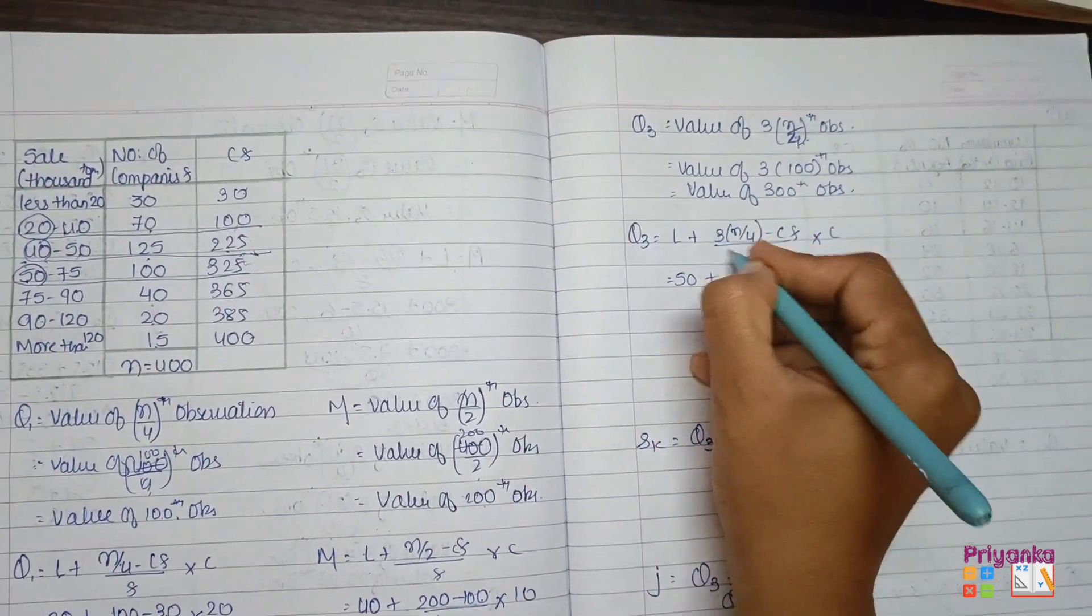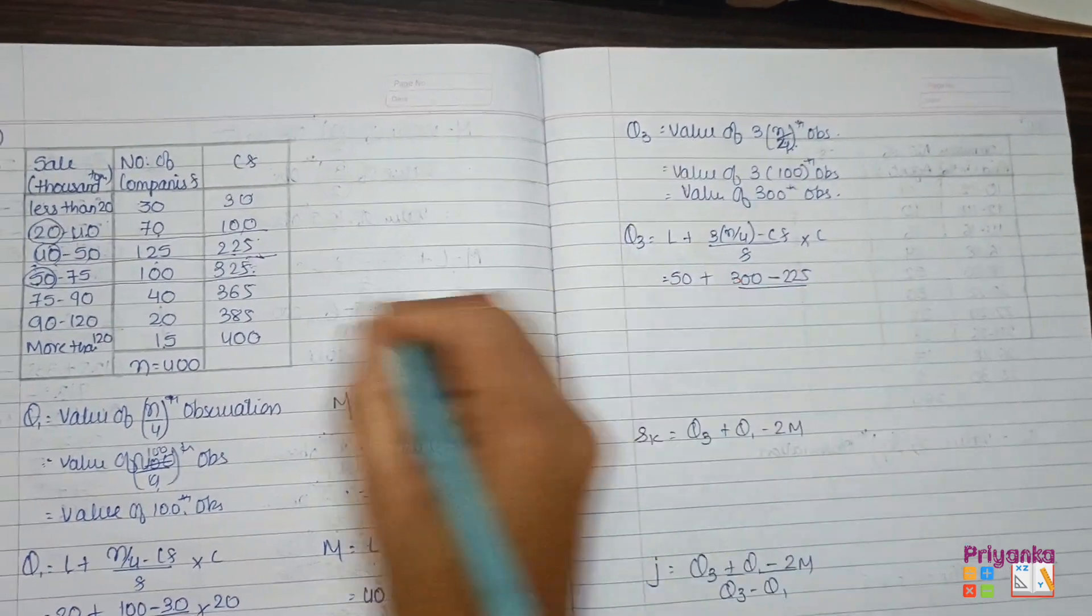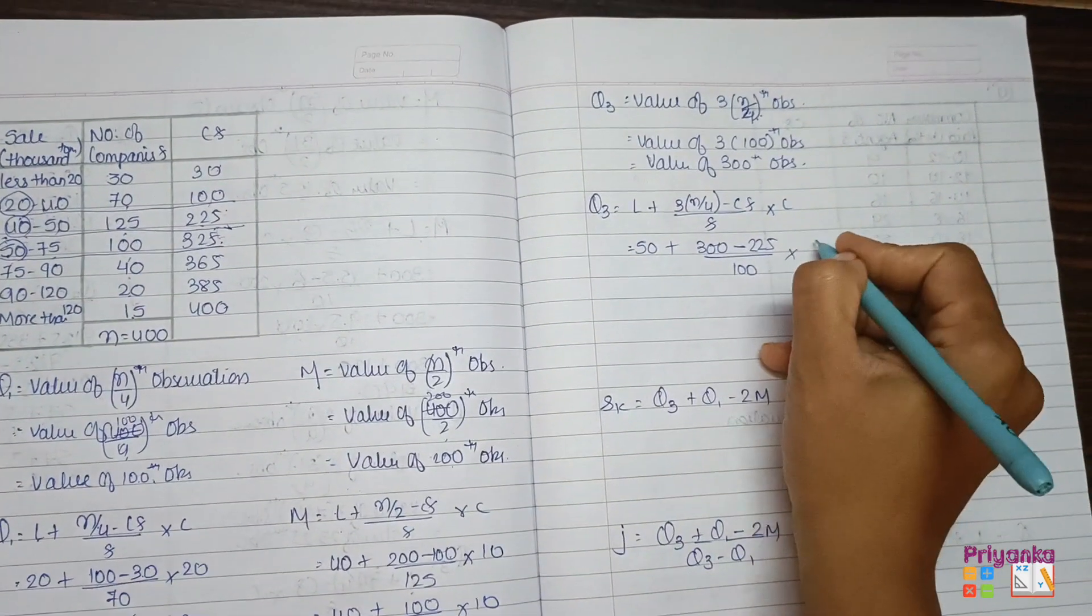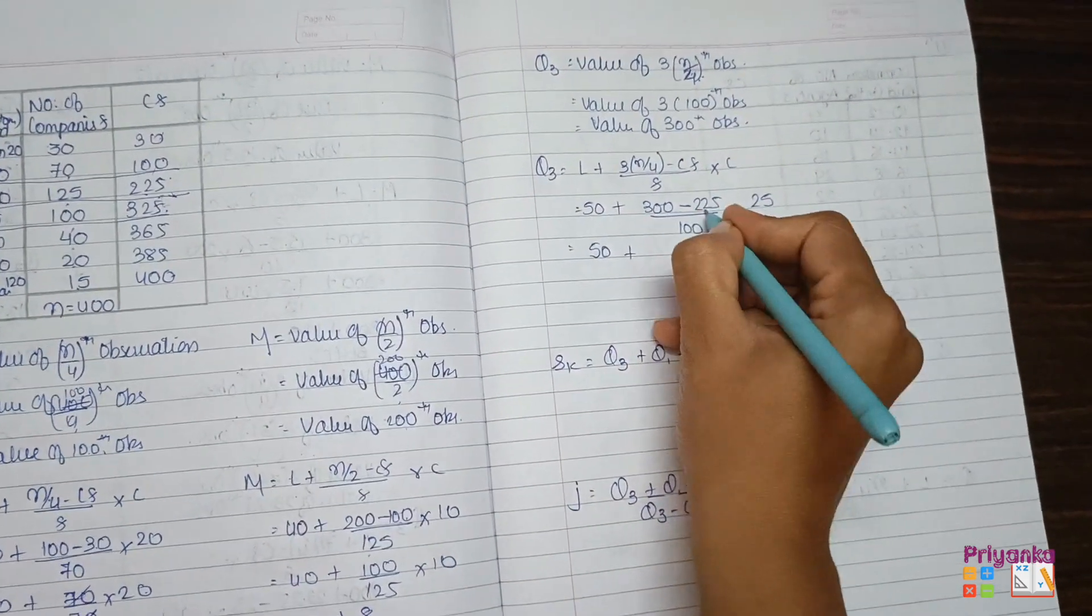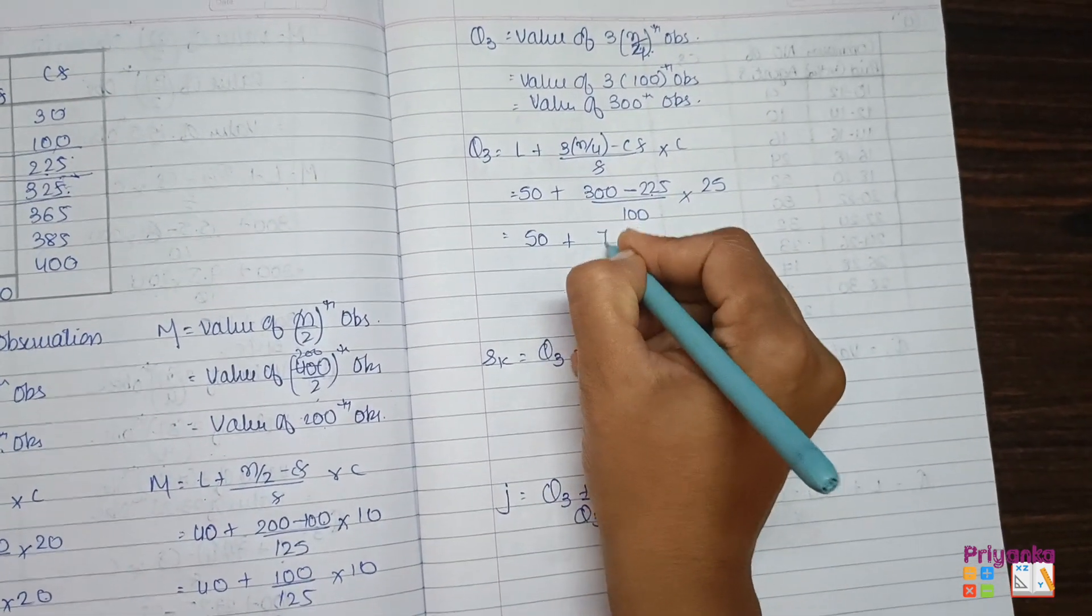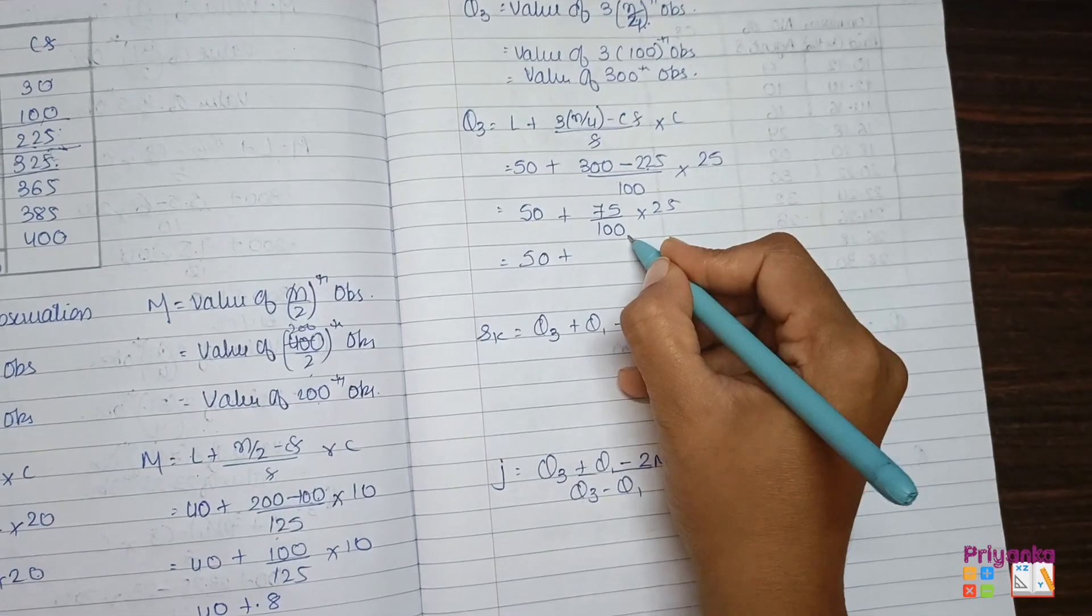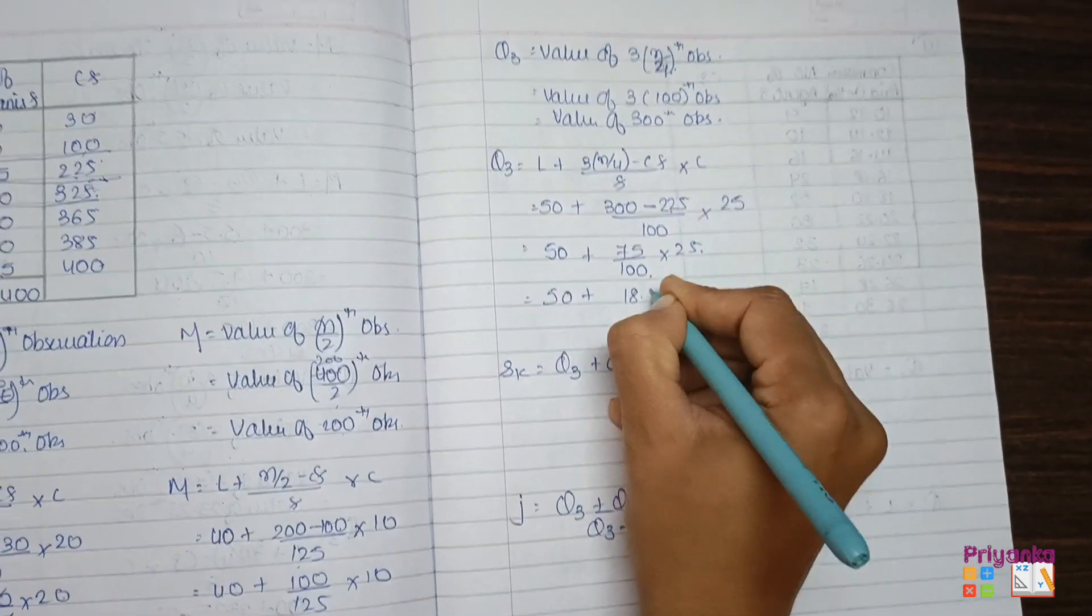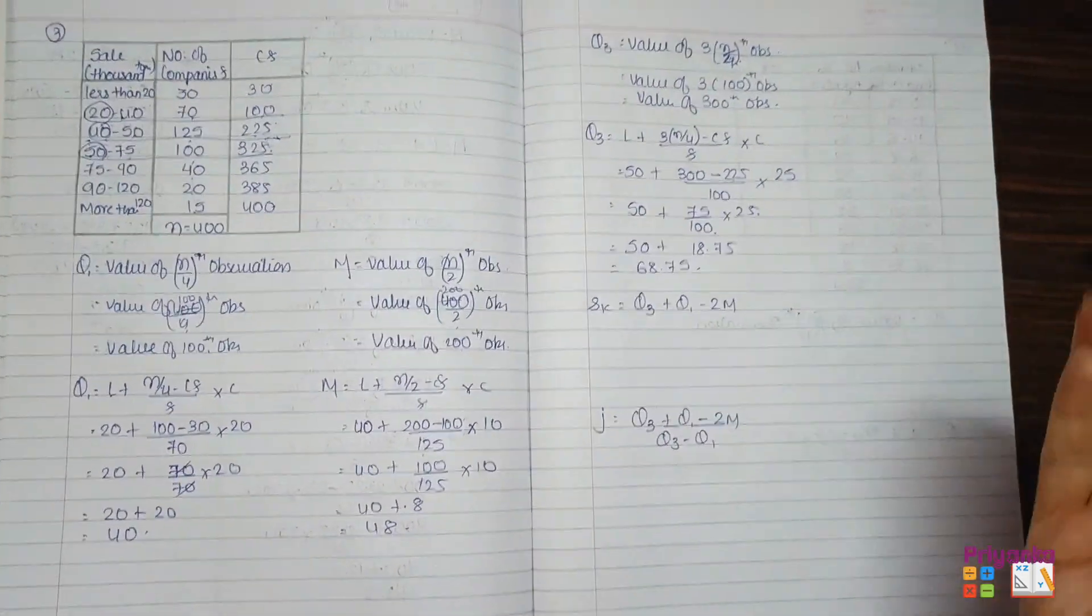50 plus the calculation is 300 minus CF 225, frequency is 100, and the class length, that is 50 minus 75, will be 25. All the class length is different. So 300 minus 225, here we get 75 divided by 100 into 25. 50 plus 75 divided by 100 multiplied by 25, you will get 18.75.